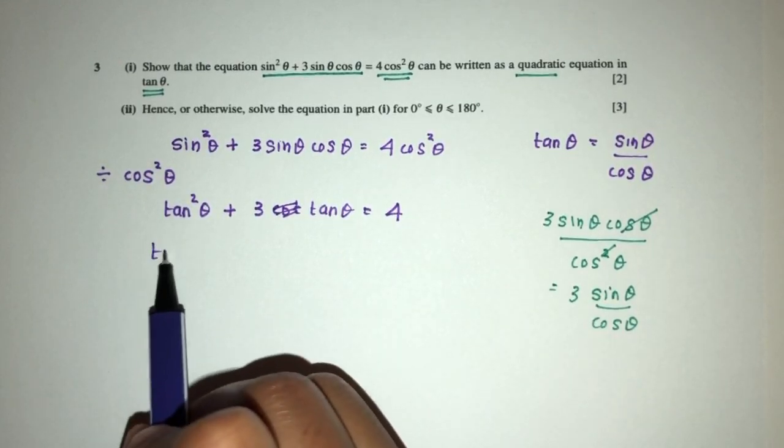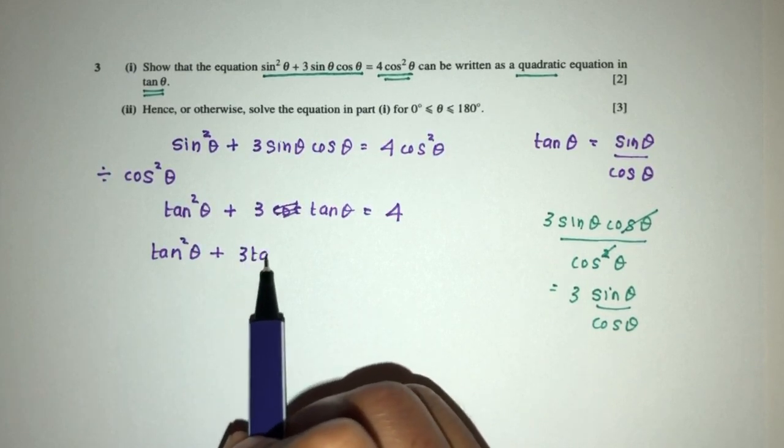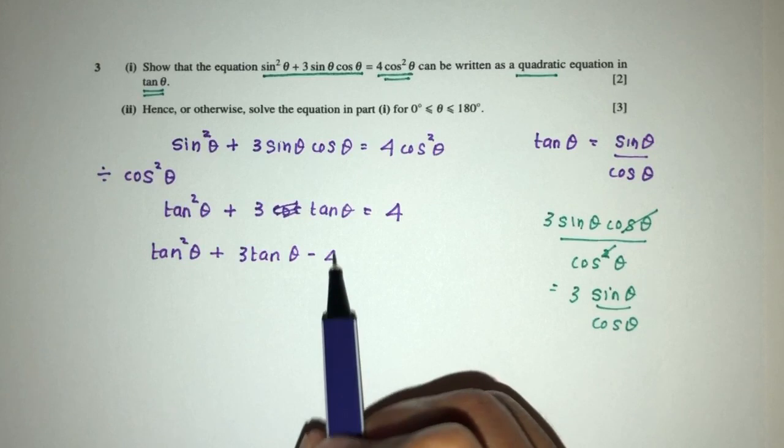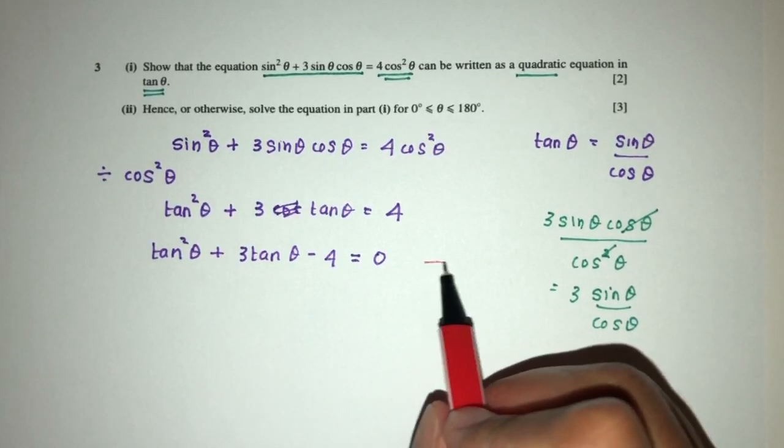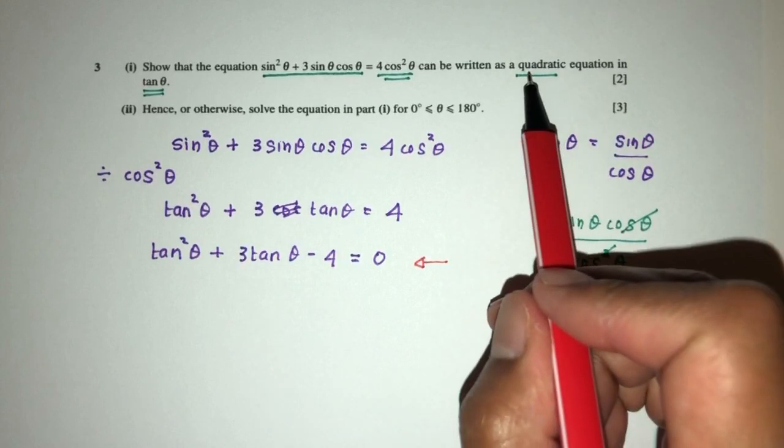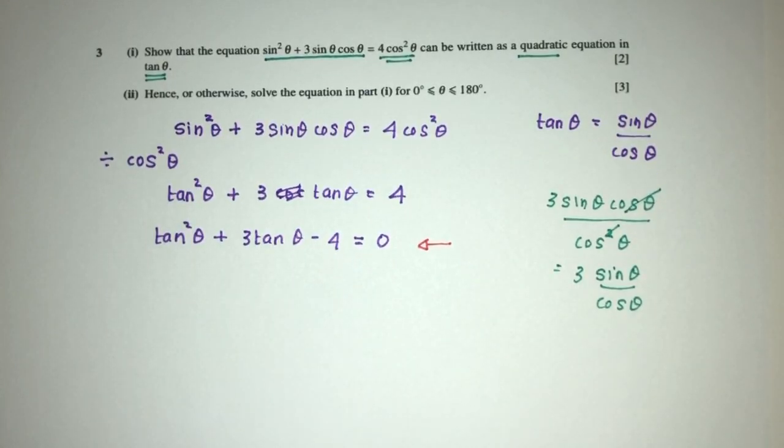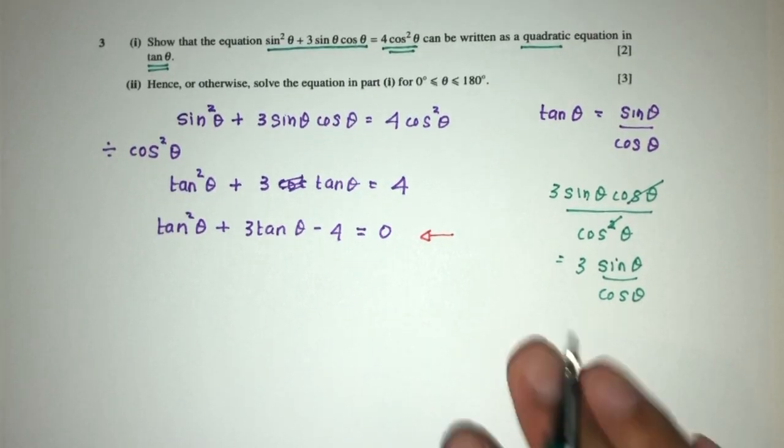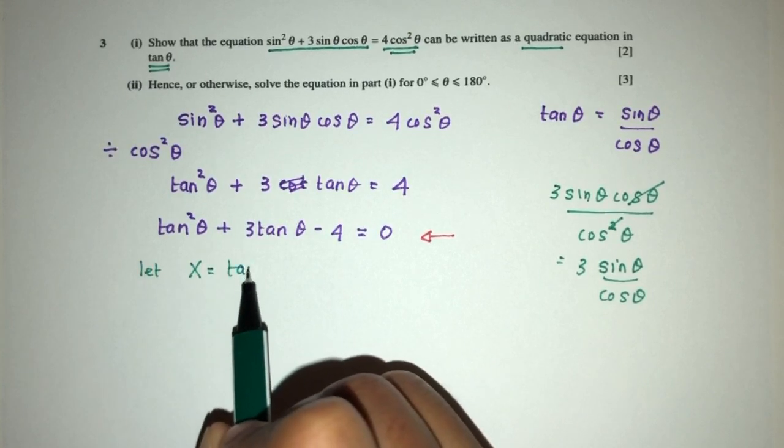So we arrange, you will have tan²θ + 3tanθ - 4 = 0. This is shown as required for a quadratic equation. Here we have square, here we have linear, and then minus constant for the quadratic equation. Now to move on, I can do something. Let x equal tan θ.